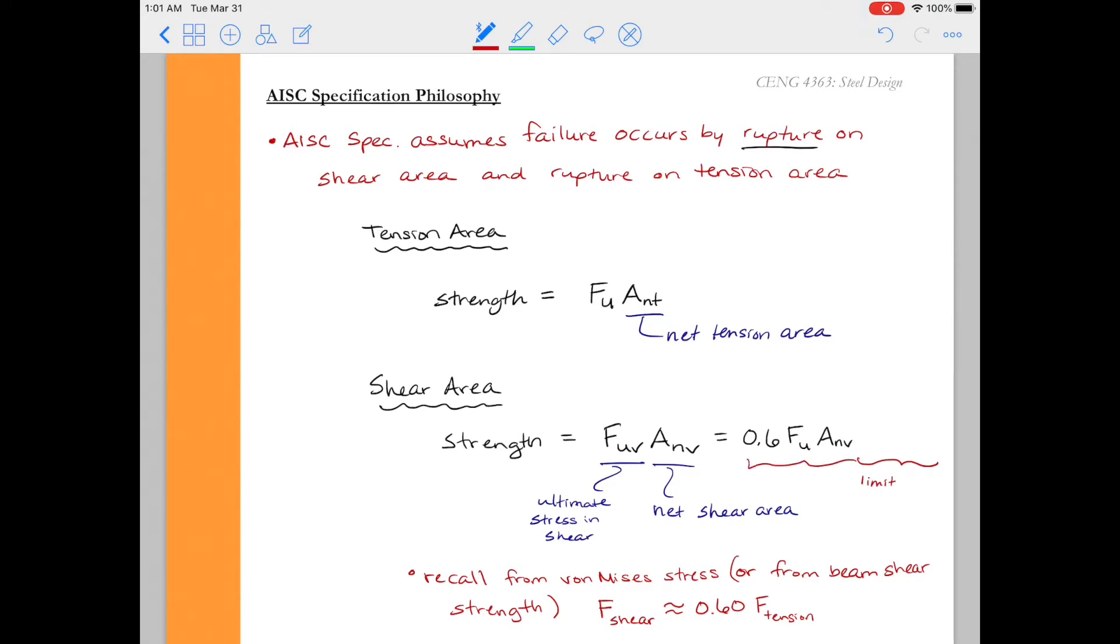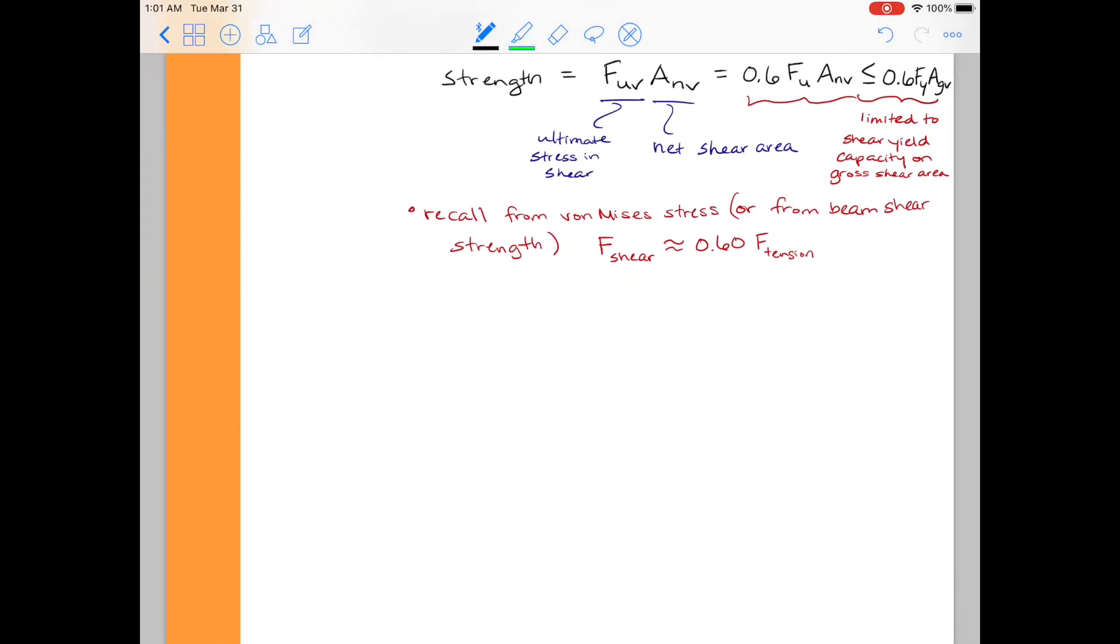0.6 F sub u times anv is when we expect fracture on the shear area. But because connections can get pretty long, we would also be very concerned if our shear area was yielding. So if we had significant amount of stretch on the shear area, that could lead to a member that becomes unusable. So we're going to take this value of 0.6 F sub u times anv, and we're going to limit it to the shear yield capacity, but on the gross shear area. So that's going to give us 0.6 Fy times agv, which will be our gross shear area.